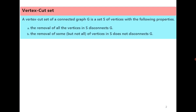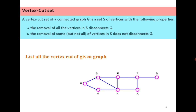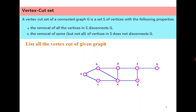Vertex cut set: it is a subset of the vertex set whose removal disconnects the graph. It should be the minimal set. For example, try to find all the vertex cuts of the given graph.